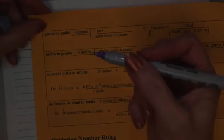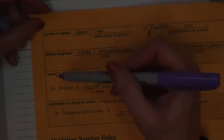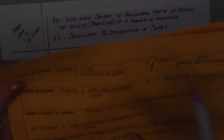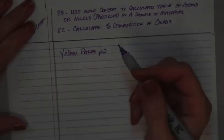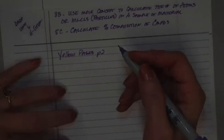So, page 2 on your yellow pages, grams to moles, moles to grams, moles to molecules or atoms, molecules or atoms to moles, back and forth like that. And the first thing I'm going to do is talk about changing grams to particles. How do you do the calculation?